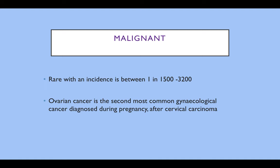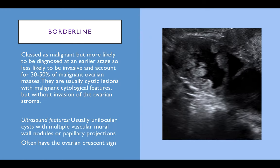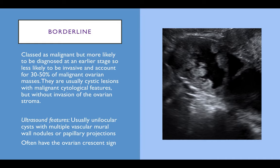Malignancy in an adnexal mass in pregnancy is incredibly rare. Ovarian cancer is the second most common gynaecological cancer diagnosed in pregnancy after cervical cancer. The most common form is a borderline malignancy — classed as malignant but more likely diagnosed at an earlier stage, less likely to be invasive, and accounting for 30 to 50% of malignant ovarian lesions. They are usually cystic lesions with malignant cytological features but no invasion of the ovarian stroma. The ultrasound features are typically unilocular cysts with multiple irregular vascular papillations, often with the ovarian crescent sign, and they can be bilateral.